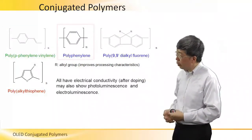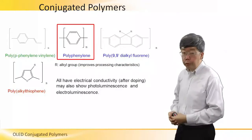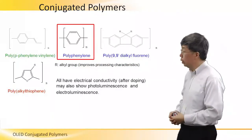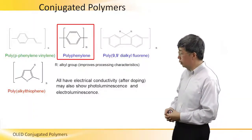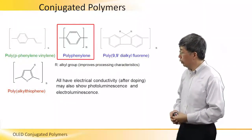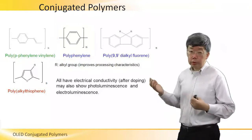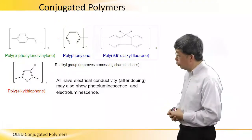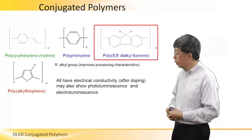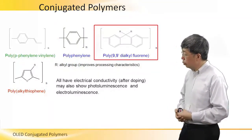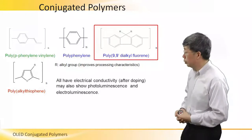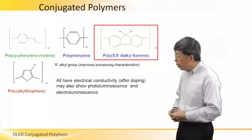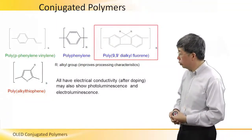The second example is a blue emitter. It's called polyphenylene. The third one, which is also a blue emitter, is called poly-9,9'-dialkyl fluorene.